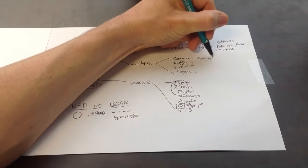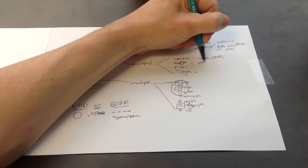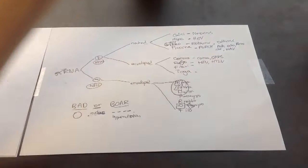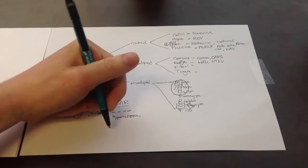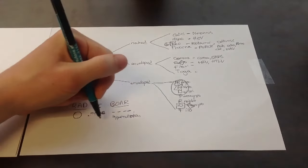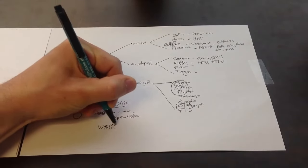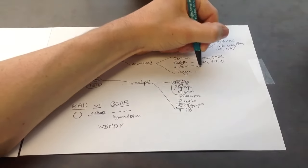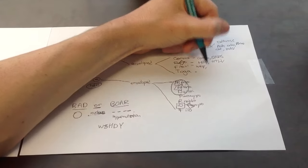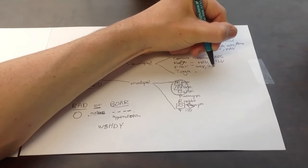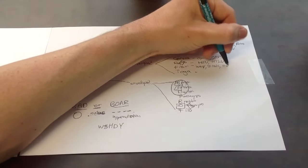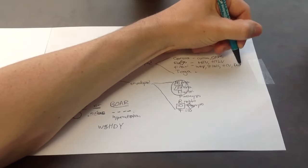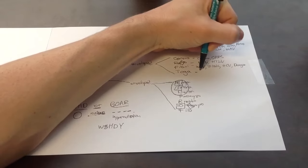Corona gets two. It has corona and SARS. Retro has HIV and H-T-L-V. Flavivirus. Oh, I have a mnemonic for this one. Flavo Flav is washed up or washed up. W-S-H-D-Y. So we have West Nile virus. We have St. Louis encephalitis virus. We have HCV, hepatitis C. We have Dengue. And we have yellow fever.